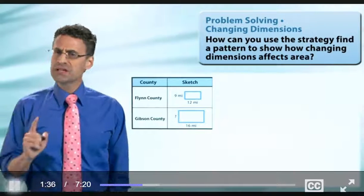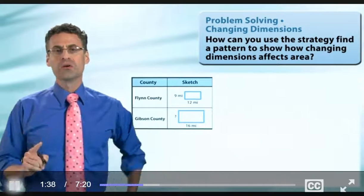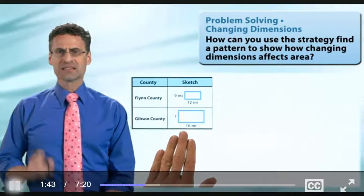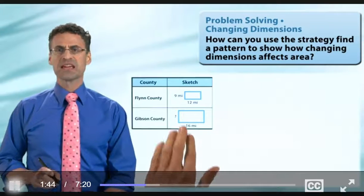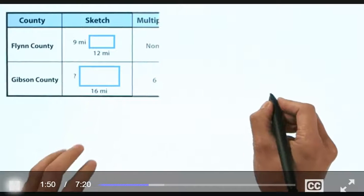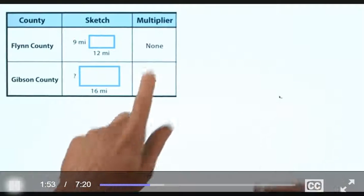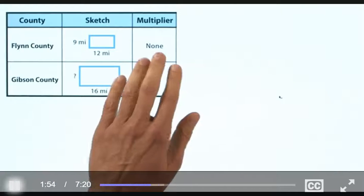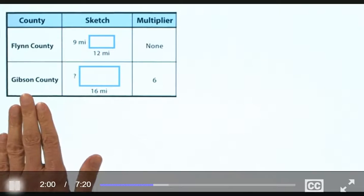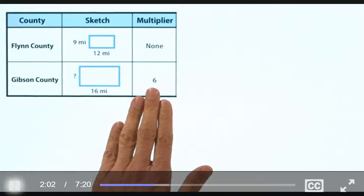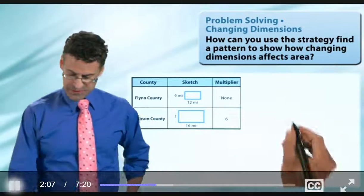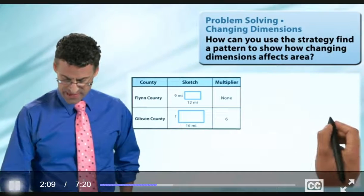Now, we know something else that's really interesting. We know that the area of Gibson County is, in fact, six times the area of Flynn County, which means that we actually have, in fact, what's called a multiplier. Now, there's no multiplier for Flynn County, because Flynn County, its area is itself. But the area for Gibson County is actually six times the answer for Flynn County. Now, that's really helpful, because we can find the area of Flynn County. In fact, that's not hard at all, right? We know exactly how to do that.